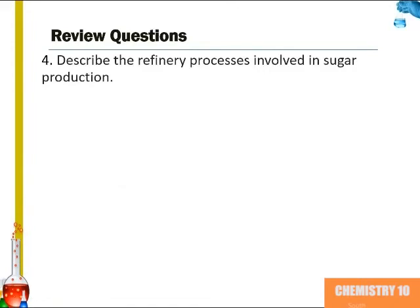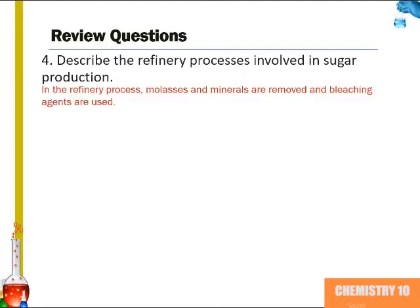Question 4: Describe the refinery process involved in sugar production. In the refinery process, molasses and minerals are removed and bleaching agents are used.